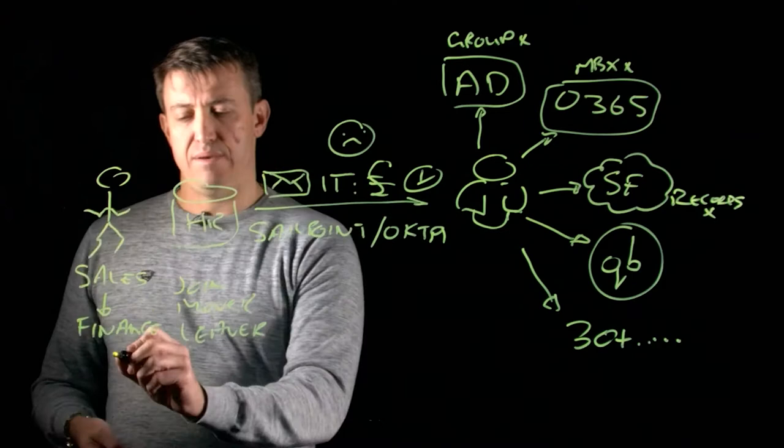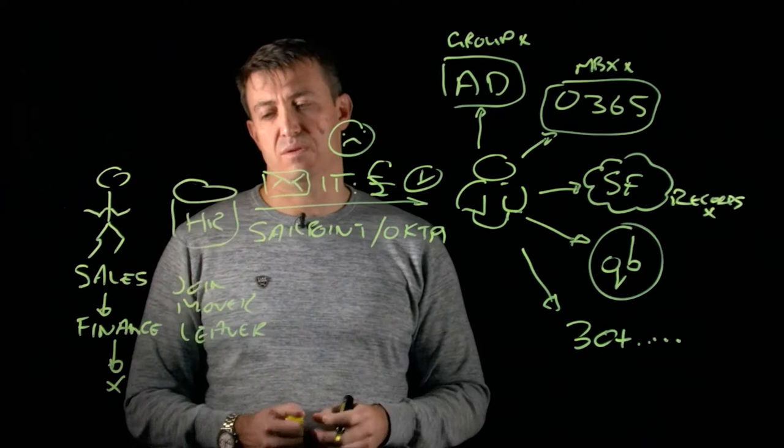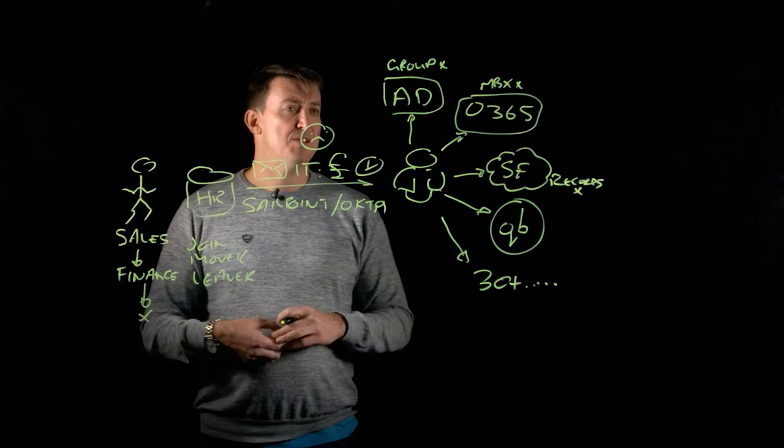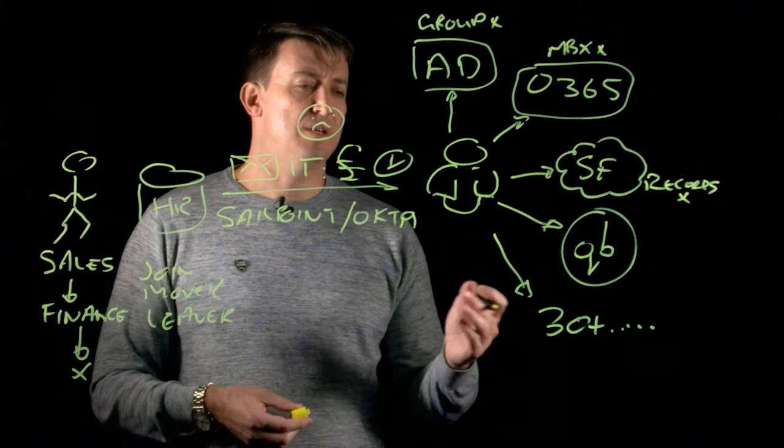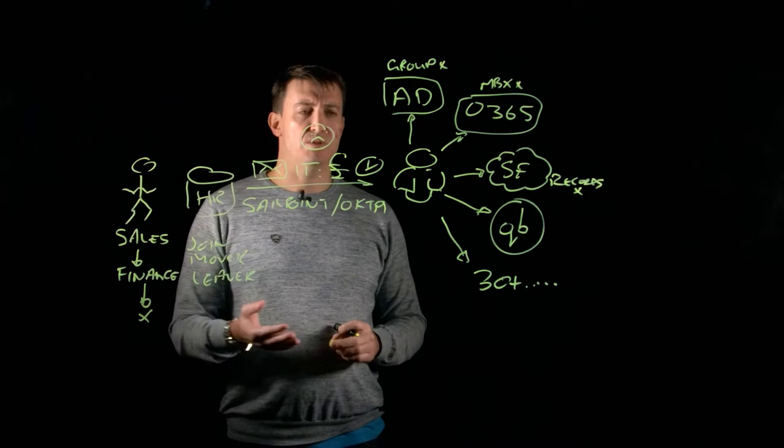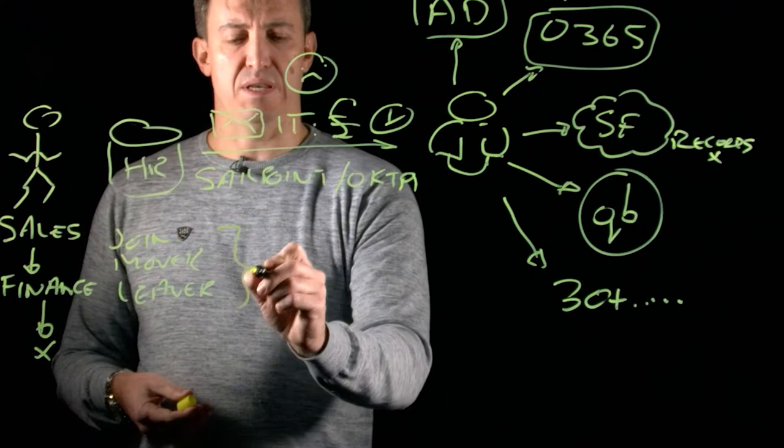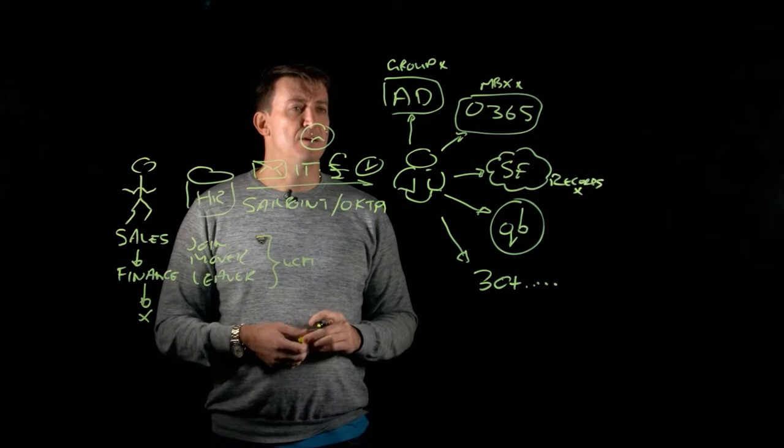Similarly, we have the leaver process. When our user leaves the company, we want to be able to go and automate the process of removing all of his access. Now if we've done that process manually, often what happens is it's not done in a timely fashion. Some of the access remains, and we end up with a person who no longer works with our organization who still has access to all of our sensitive data. However, if we use one of these products like SailPoint and Okta, we can automate all of this process. We can automate the joiner, mover, leaver process, which is commonly known as lifecycle management, and we can make sure that everything here is done in a timely fashion and it's done correctly.